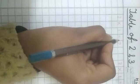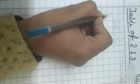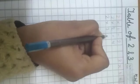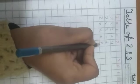Table of 2. First we write table of 2. 2 1's are 2. 2 2's are 4. 2 3's are 6. 2 4's are 8. 2 5's are 10.